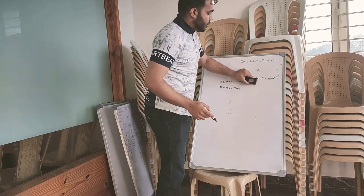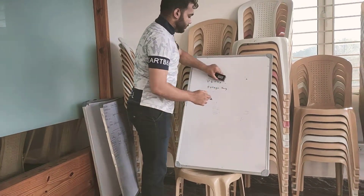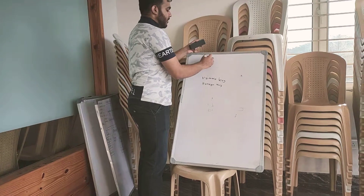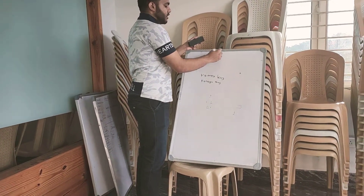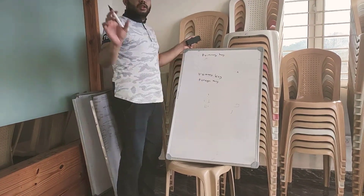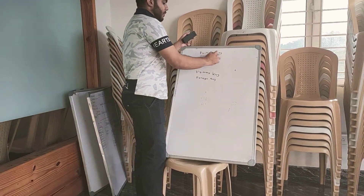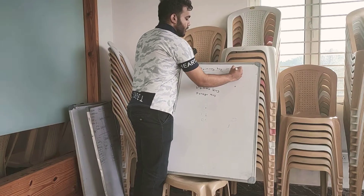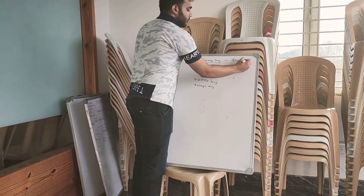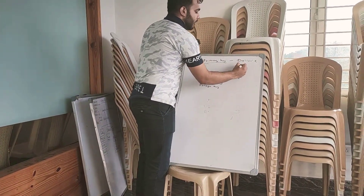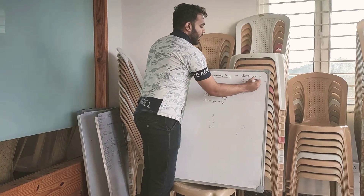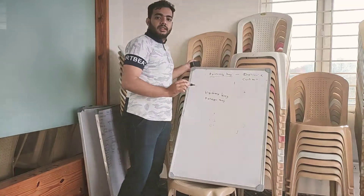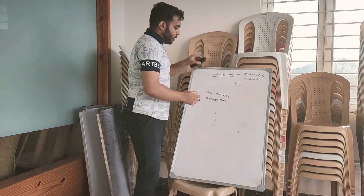Now let's see the two key constraints. What is a primary key? A primary key is used to set a unique identity for a column. Primary key cannot have duplicate data — duplication is not allowed — and it cannot be null. Also, in a table, we can have only one primary key.